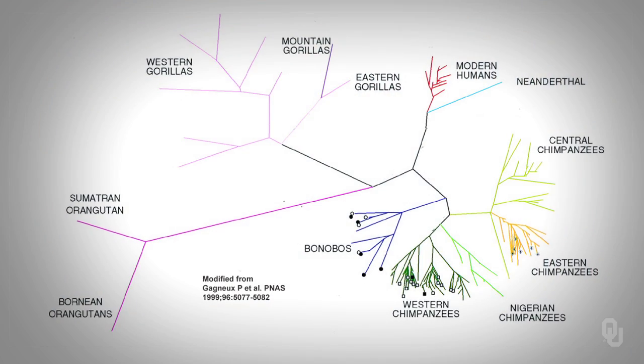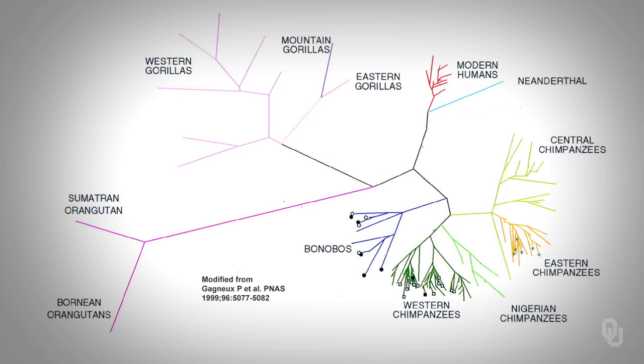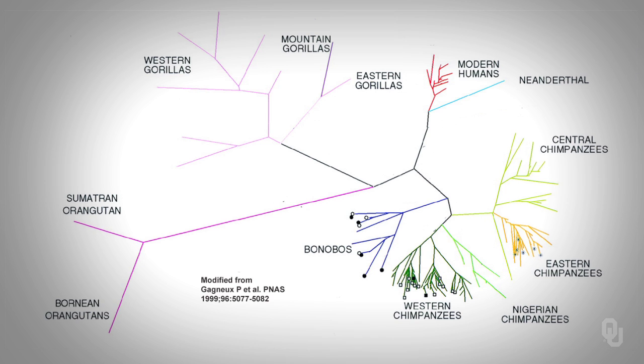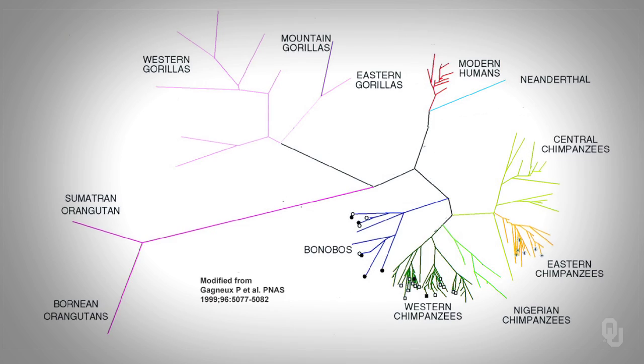Consider again the earlier tree. Chimps, humans, gorillas, and orangutans are different species, and bonobos are generally considered a different species from other chimps. Notice that there is a clear branch separating species. However, this branch would not be so easy to find if it wasn't for having prior knowledge about the species. There are other internal clusters within these species that do not define species.